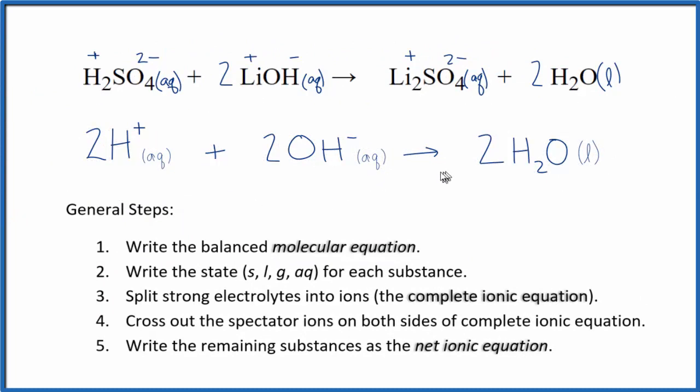So this is our net ionic equation for sulfuric acid plus lithium hydroxide. One last thing we should do, we have the same coefficient in front of everything. We could reduce that down to a lower number. So instead of a 2, we'll put a 1. And since we don't usually write the 1, we'll just do it like this. And this is a better net ionic equation for H2SO4 plus LiOH.